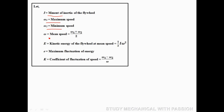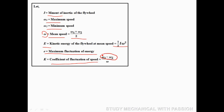Let I be the mass moment of inertia of the flywheel. Omega 1 is the maximum speed, omega 2 is the minimum speed, and omega is the mean speed, where omega = (omega1 + omega2) / 2. The kinetic energy of the flywheel at mean speed is E = ½ I ω². The maximum fluctuation of energy is E_n, and the coefficient of fluctuation of speed is K = (ω1 − ω2) / ω.